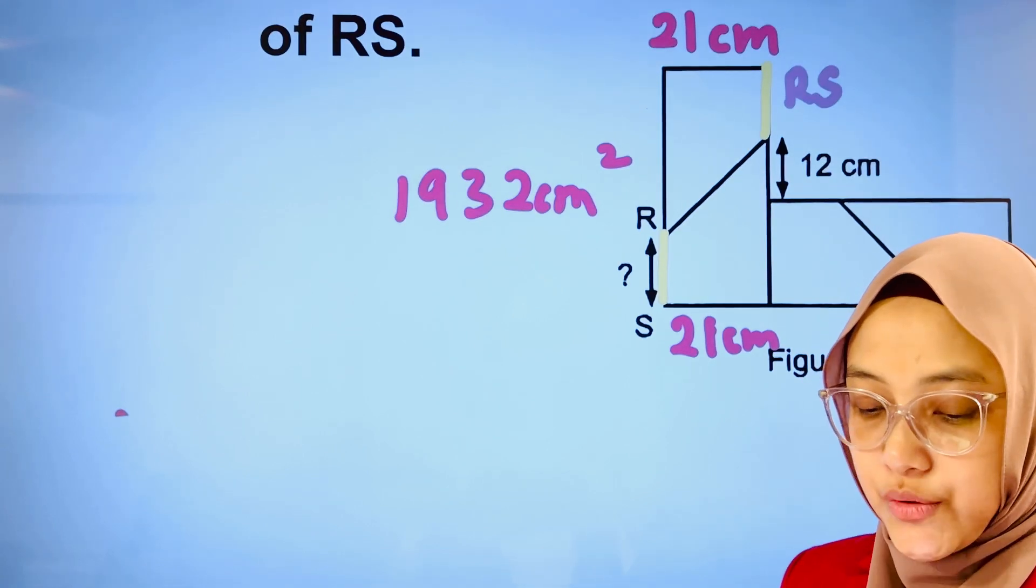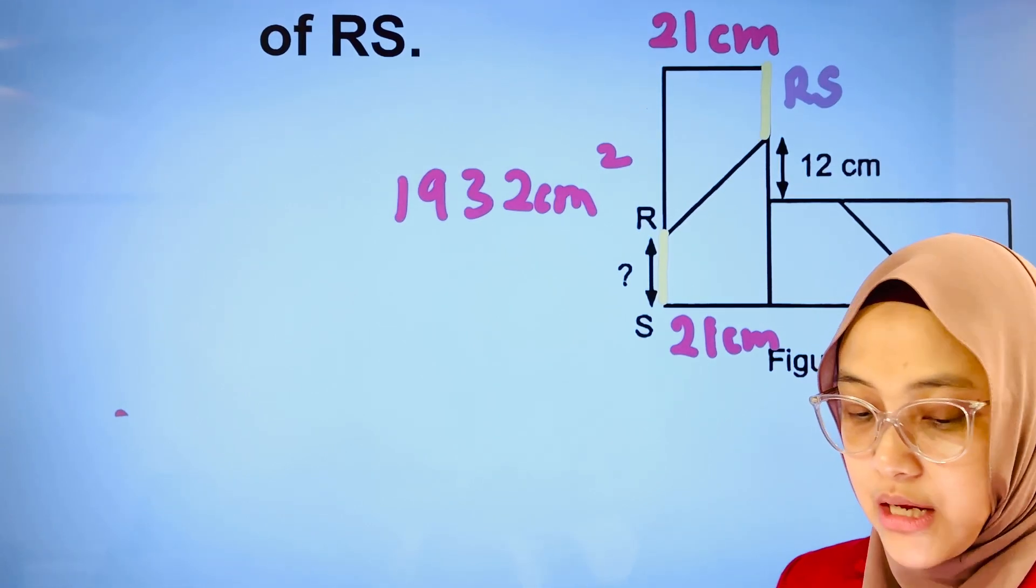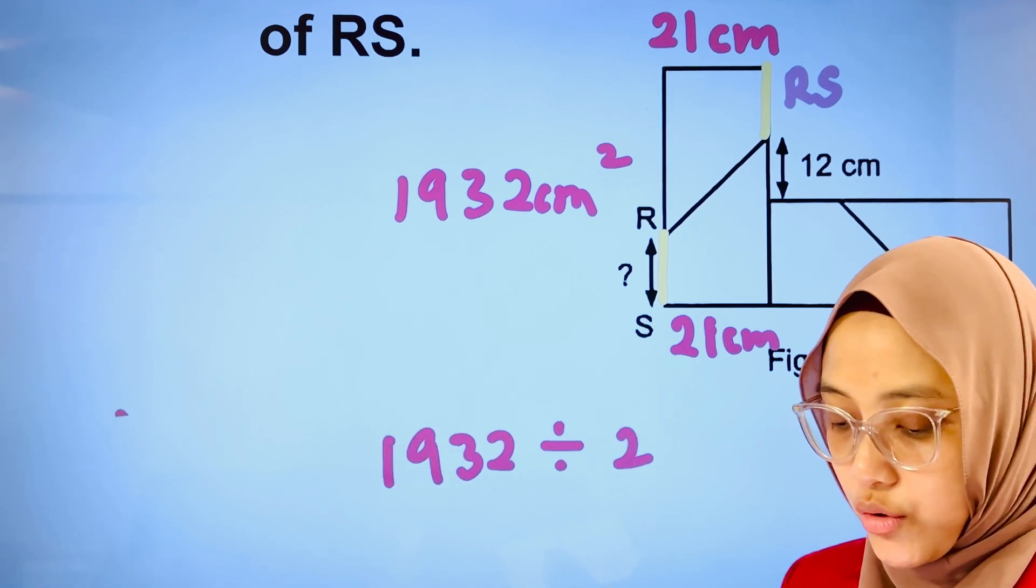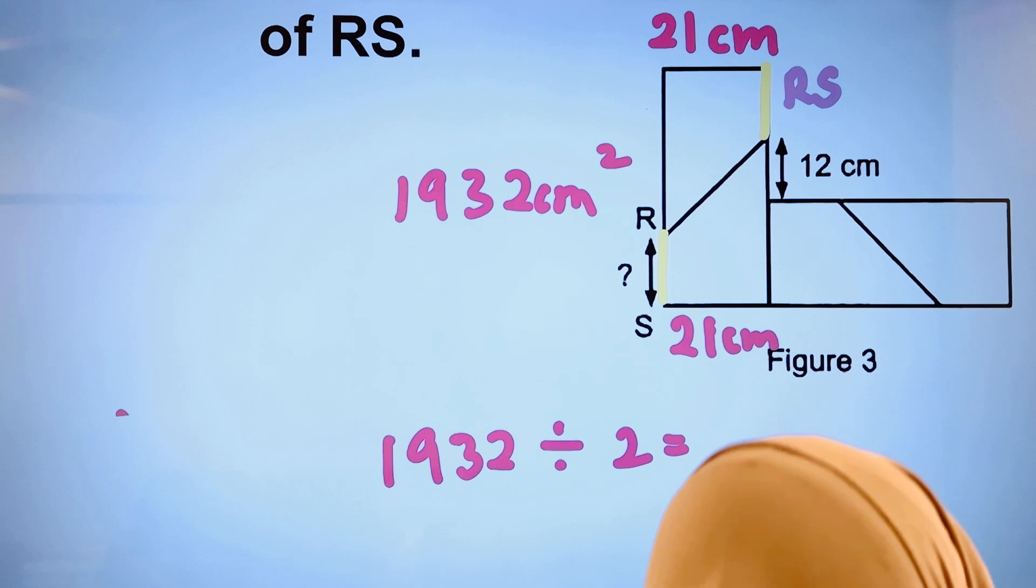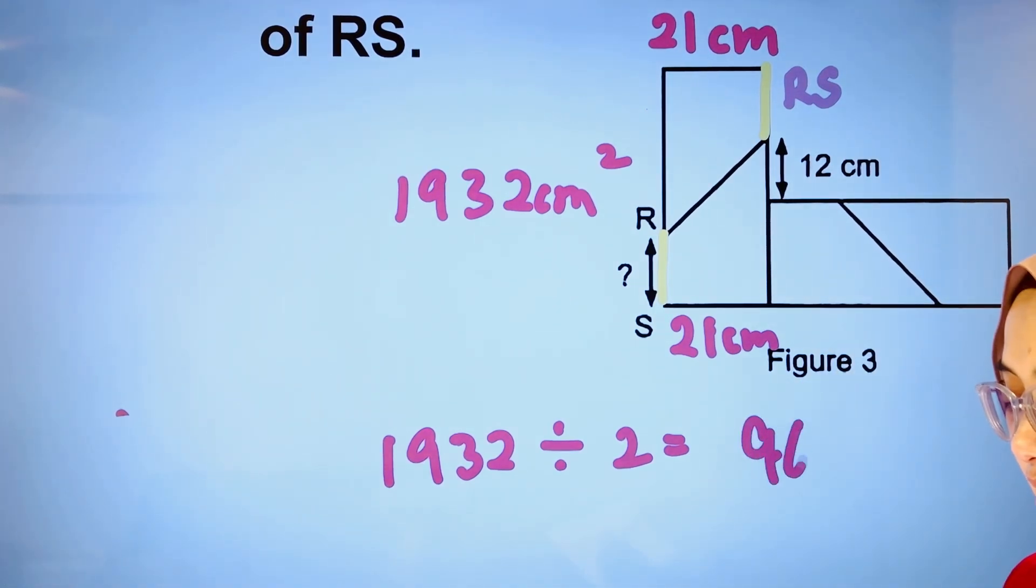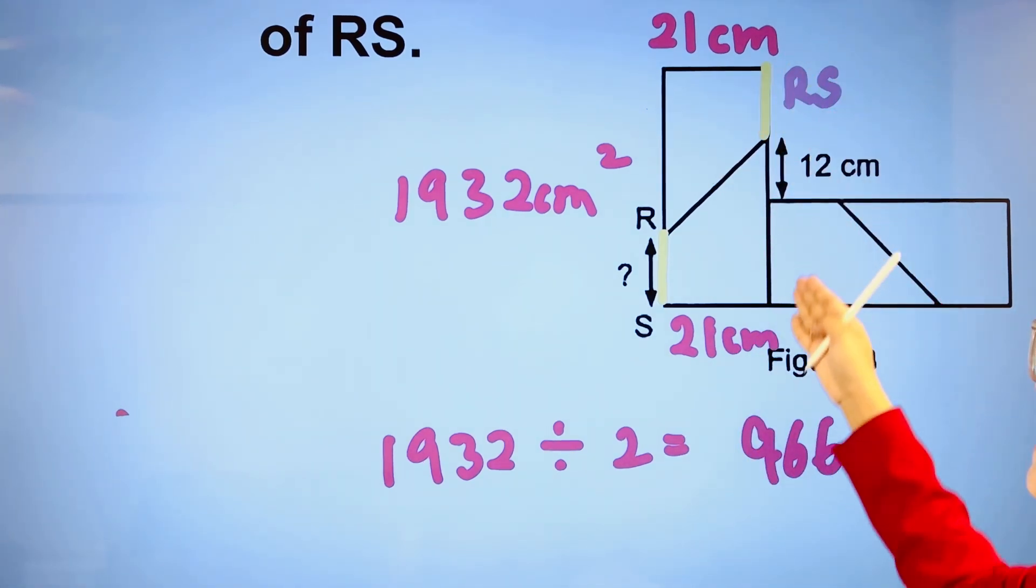What we are going to do is divide 1932 by 2, and that gives us 966. This is the area of one rectangle.